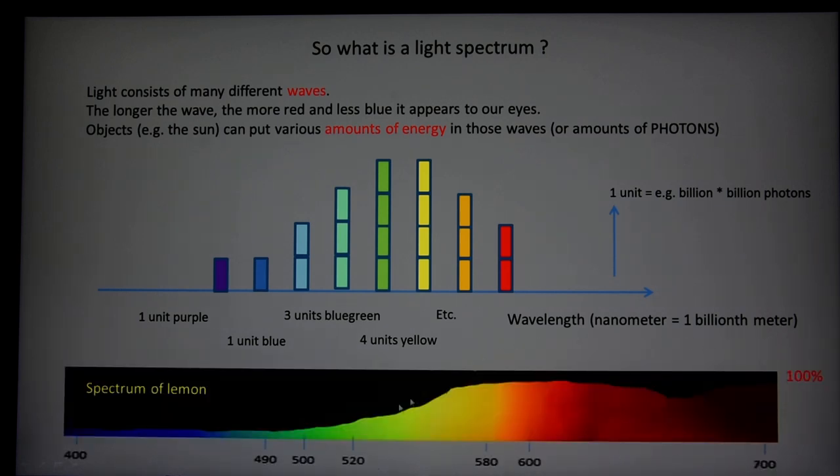For example, here you have the spectrum of a lemon. You see all the different wavelengths here, and the intensity, the amount of energy in it, will be the height of each different wavelength. In billions of billions of photons, but let's say for simplicity there's two photons in the red waves flying into our eye, three in the orange, four in the yellow, and so on. Here we have a lemon—it has mostly reds and a little bit greens, no blues, and that will make the lemon look yellow.